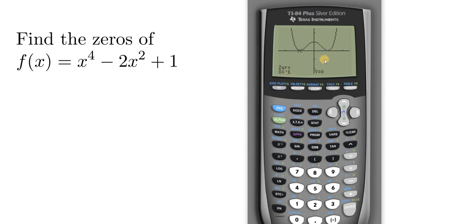Let's find the one over here on the right. So you hit second, trace, go down to where it says zero, and then hit enter one time. Then you move your cursor all the way over here, because we want to be to the left of where the zero is. The zero is right here where it touches the x-axis. Our cursor is to the left, so things are good.